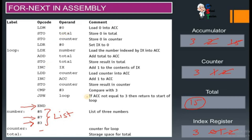This is how the for-next loop of a high level language is implemented in assembly language. If in an examination you are asked to implement a for-next loop and give some output, you should remember how the index register and accumulator have both been used. I hope you have understood the concept of how assembly language programs are made, and specifically how the for-next loop is implemented in assembly language. Thank you very much, Allah Hafiz.